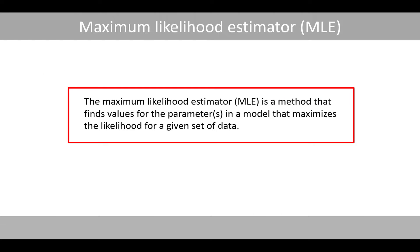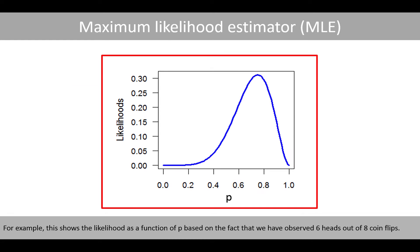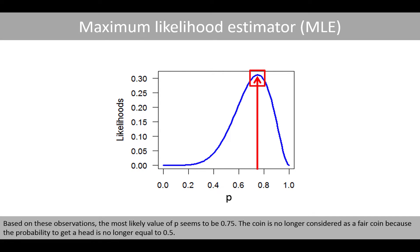The maximum likelihood estimator is a method that finds the values of the parameters in a model that maximizes the likelihood for a given set of data. For example, this shows the likelihood as a function of p based on the observation of six heads out of eight coin flips. Based on these observations, the most likely value of p is 0.75. The coin is no longer considered a fair coin because the probability to get a head is no longer equal to 0.5.